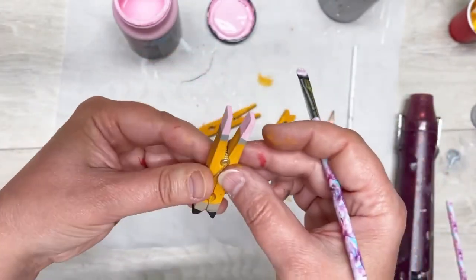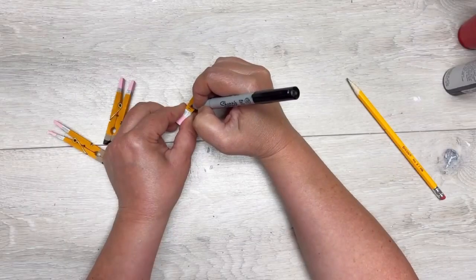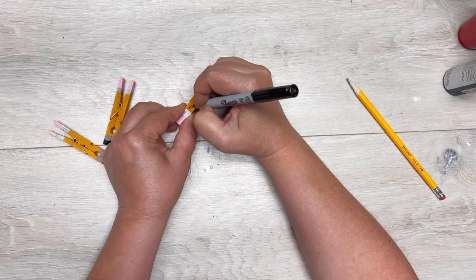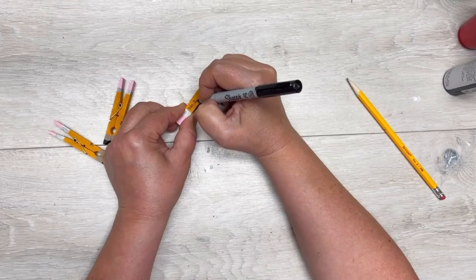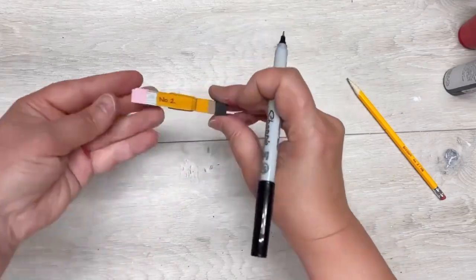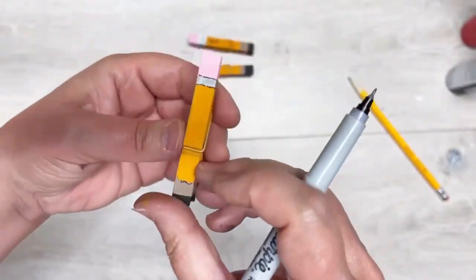I think it's super cute. Now you could stop there, but you know I won't. I took a Sharpie and I wrote number two because my husband told me that pencils say number two on the side, so of course I had to do that.